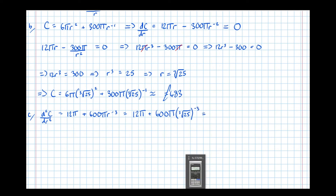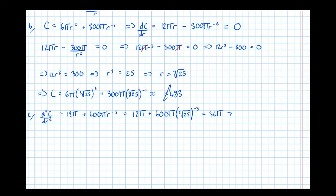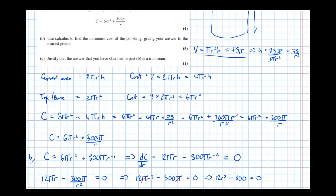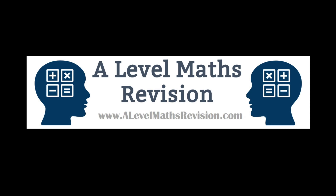Clearly this will be positive, but we calculate it to guarantee the mark: 12π + 600π × (∛25)⁻³ = 36π, which is greater than zero. Since d²C/dr² > 0, the stationary point is confirmed as a minimum. There's the full answer — quite a lengthy question. For more videos like this, visit alevelmathsrevision.com or subscribe to our YouTube channel.